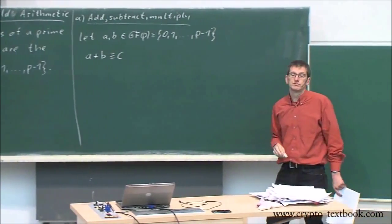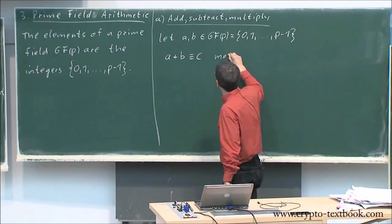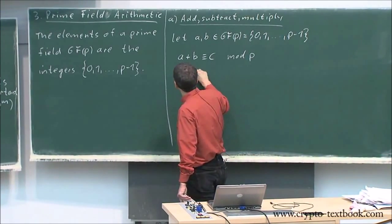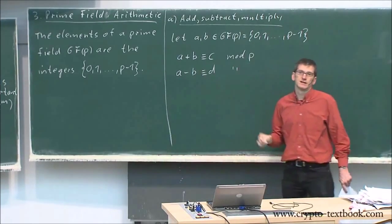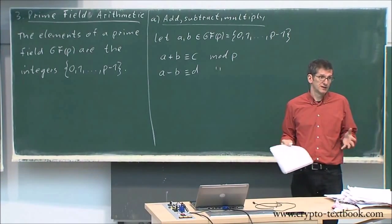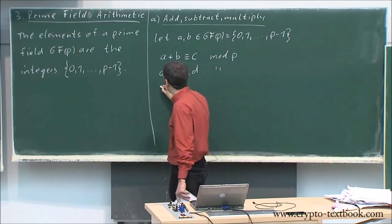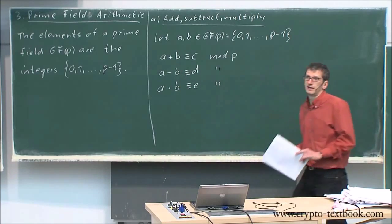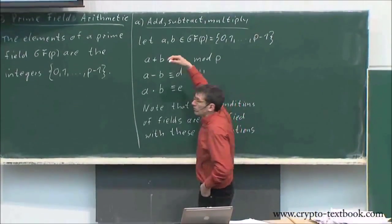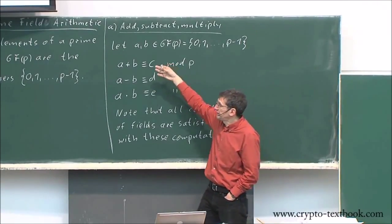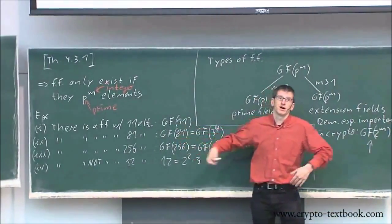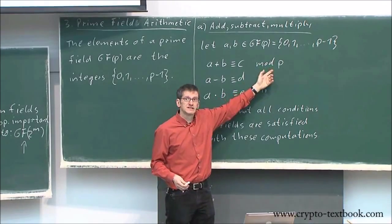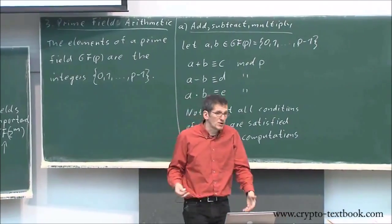If you want to add a and b, you simply do addition and then modular reduction mod p. To subtract a minus b, you subtract and do modular reduction — everyone is happy. If you want to multiply a times b, again you compute a times b modulo p. So for a prime field like GF(11), you do normal integer arithmetic — addition, subtraction, multiplication — and then take the remainder. This is the modular operation.